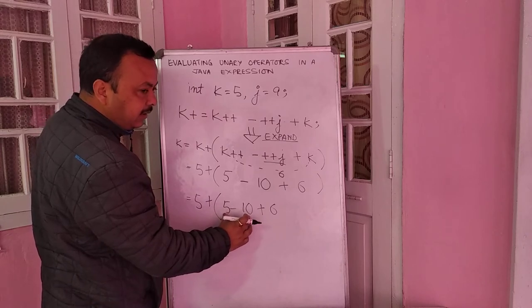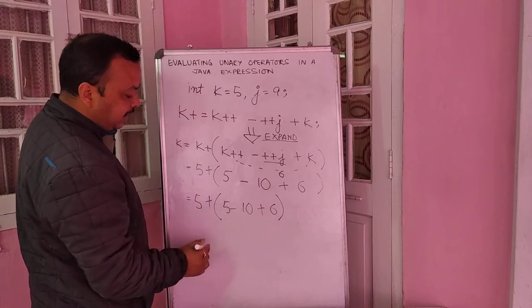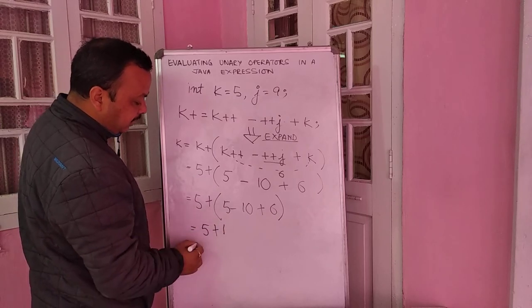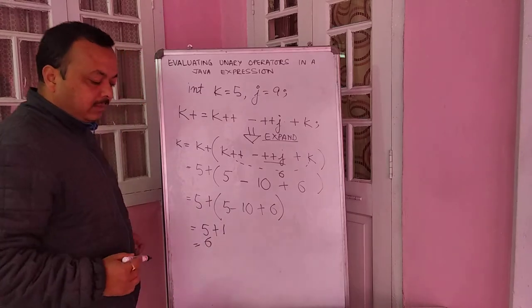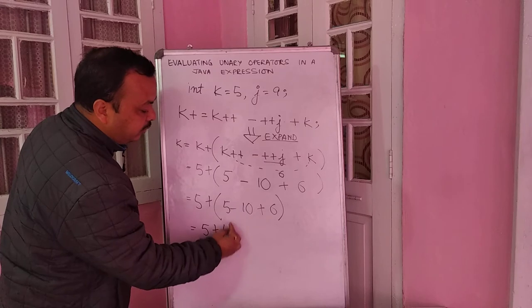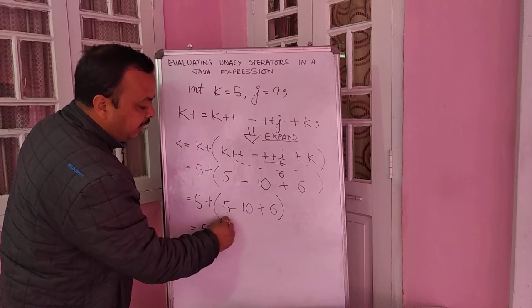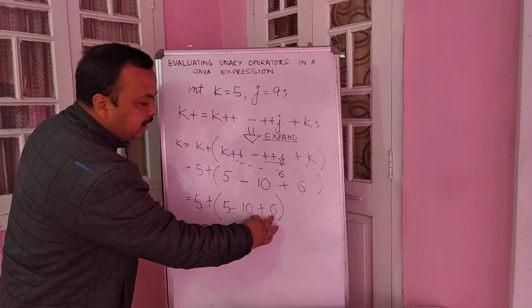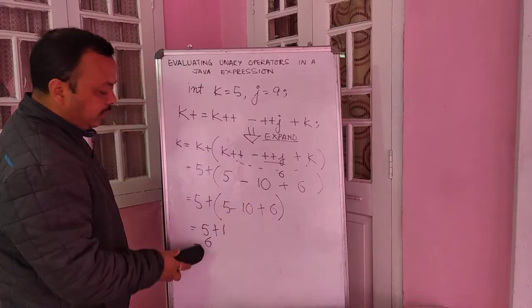Evaluating inside the parentheses: 5 minus 10 is negative 5, and negative 5 plus 6 is positive 1. So k equals 5 plus 1, and the answer is 6.